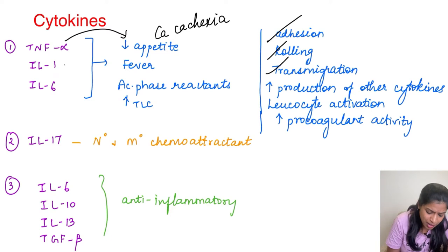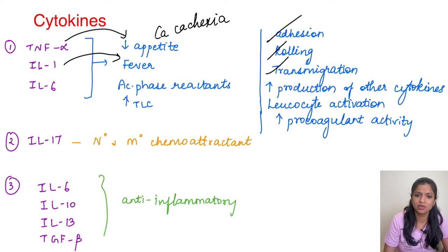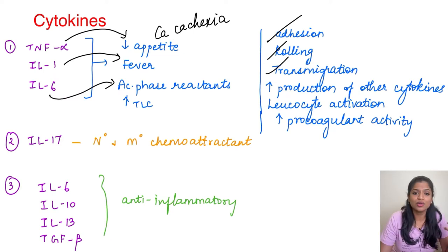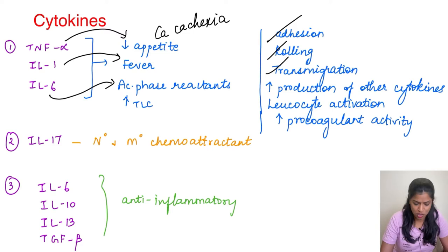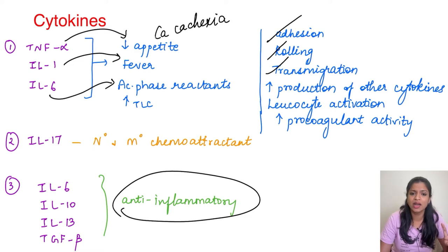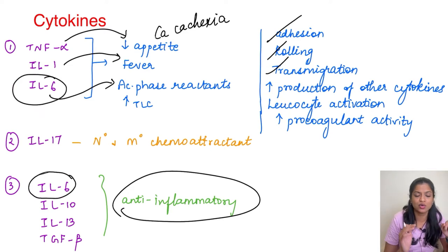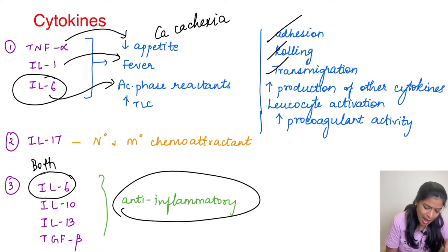Interleukin-1 is the major cytokine responsible for causing fever — though prostaglandin E2 also causes fever, IL-1 is majorly responsible. For producing acute phase reactants from the liver, interleukin-6 is very important. Interleukin-17 is a chemoattractant for both neutrophils and monocyte-macrophages. Interleukin-6, 10, 13, and TGF-beta are very important as they are all anti-inflammatory mediators — keep these in mind when asked about anti-inflammatory mediators. Also include lipoxins if the question is not restricted to cytokines. Note that interleukin-6 has both pro-inflammatory and anti-inflammatory actions.